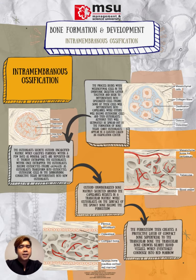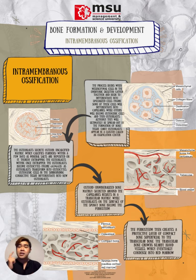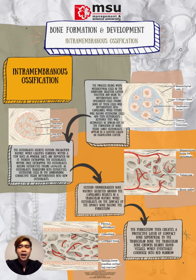Next, we will be talking about bone formation and development. In the early stages of embryonic development, the embryo's skeleton consists of fibrous membranes and hyaline cartilage. By six or seven weeks of embryonic life, the actual process of bone development — ossification — begins. There are two ossification pathways: intramembranous ossification and endochondral ossification. Bone is the same regardless of the pathway that produces it.